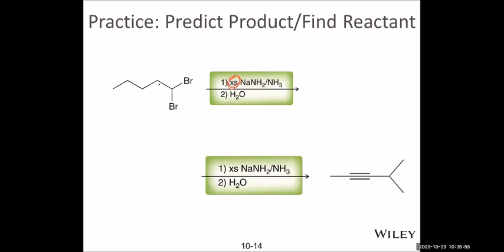The product should have lost two bromines, and the single bond becomes a triple bond. Since it is a triple bond, the carbon should be linear. There are one, two, three, four, five carbons total. This bond, once formed, should be maintained linear. So the structure is drawn with a terminal triple bond.